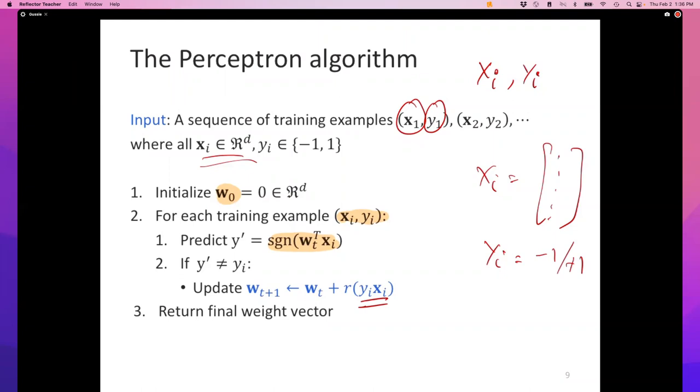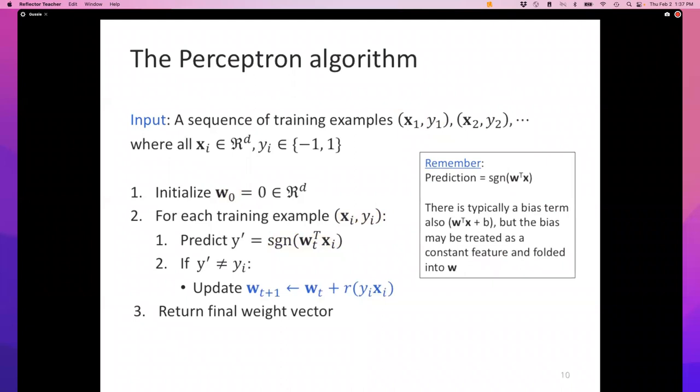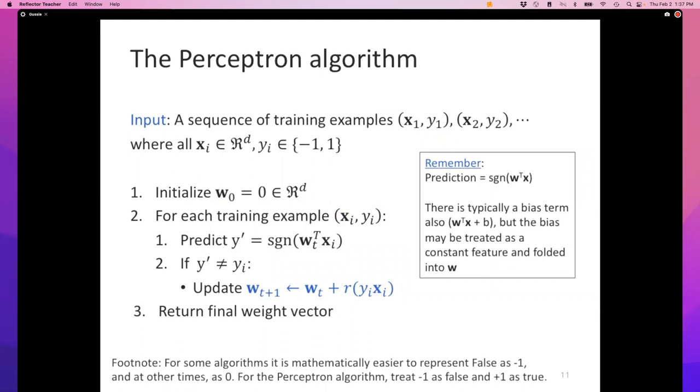It keeps doing this, and eventually when the algorithm runs out of examples, it returns the final weight vector. This is the entire perceptron algorithm. Remember the prediction I've written has sign of w transpose x_i, but there's typically a bias term - I'm assuming the bias term is part of the input features as we agreed to do in previous lectures. Another thing to note: I'm using minus one and plus one here for false and true. Sometimes you have zero and one. For perceptron, it's convenient to treat false as minus one and true as plus one.